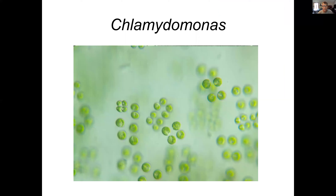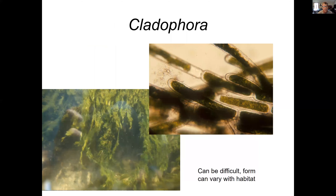Chlamydomonas would be a simple one — single cells. This can be difficult because there are other things that make colonies when they come in contact with predators, but when they're in culture they'll go back to single cells.